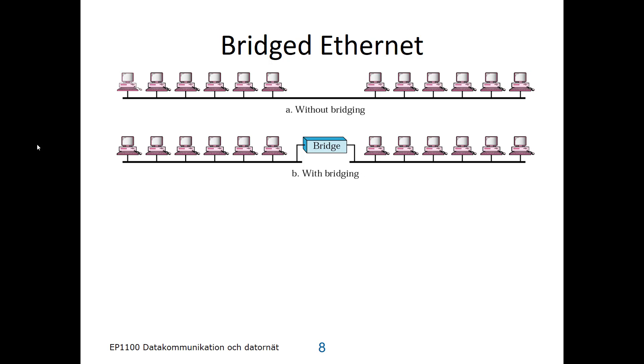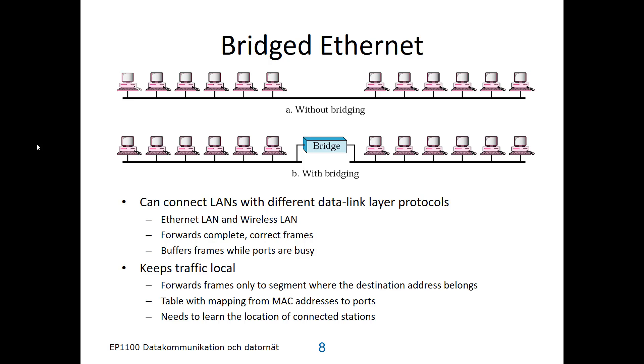A bridge can connect LANs with different data link protocols, as I mentioned, 802.11 Wi-Fi or 802.3 Ethernet. It forwards complete frames, and it buffers frames if the link on the outgoing side is not currently available. And as I said, it keeps traffic local.